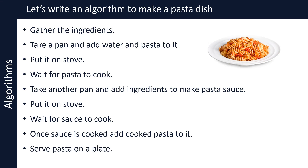We have written our first algorithm for humans. As you can see, this algorithm is simply a set of instructions to complete the task of making a pasta dish. If you follow these instructions in order, you will be able to produce a pasta dish. Now think about it — is this the best and most efficient algorithm to make a pasta dish? Can you improve it? Since there are always more than one way to solve a problem, there could be more than one algorithm to achieve the same outcome.